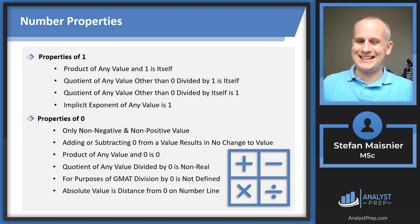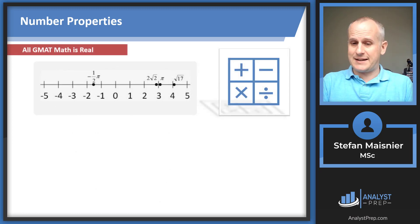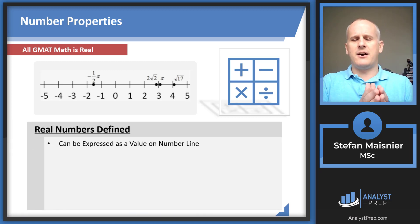Absolute value is technically the distance from zero on the number line. Because of that, absolute value is always greater than or equal to zero because you cannot have a negative distance. The absolute value symbol is just the vertical lines. Those vertical lines around negative four would be four because negative four is four units from zero on the number line. You can always consider absolute value conceptually as the distance from zero on the number line if there is no second value within the absolute value symbol. Pertaining to the GMAT, all GMAT math is real. You can see a bunch of real values, albeit irrational values, on this sample number line with zero in the center. Real numbers are any values that can be expressed on that number line with zero as the central point.